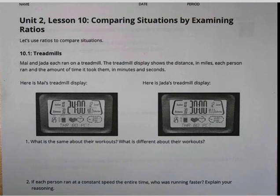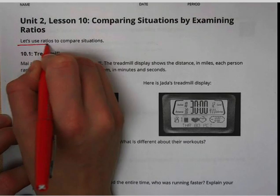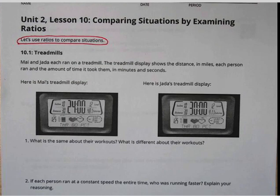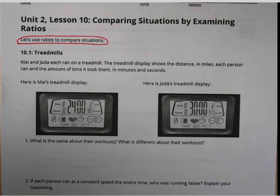Hi guys, this is your video for Unit 2 Lesson 10, which is all about comparing situations by examining ratios. We're going to use ratios to compare situations, and the types of situations that we might compare is which is a better deal, which item is cheaper, who runs faster, which person will get there first. We have a couple different examples for you here.